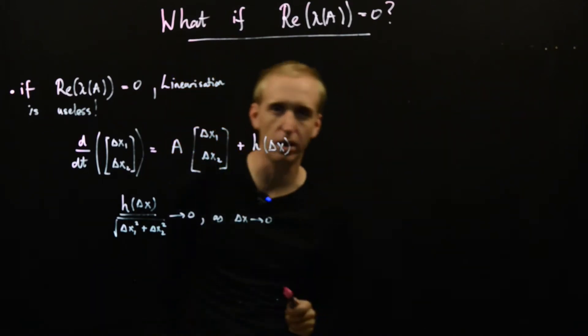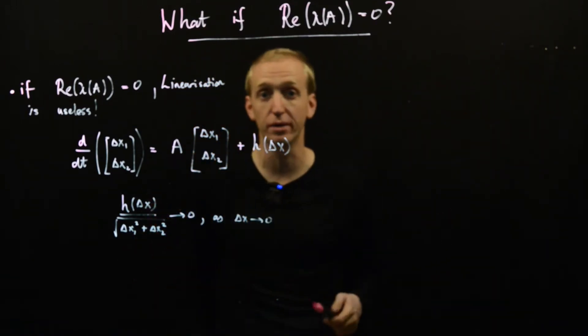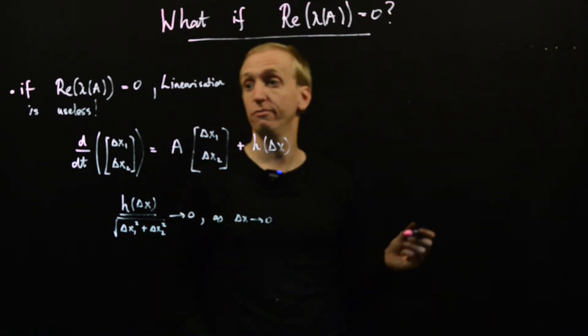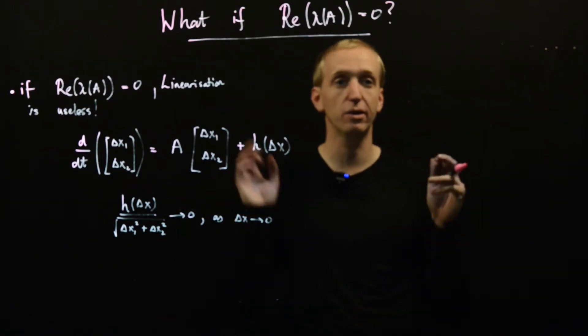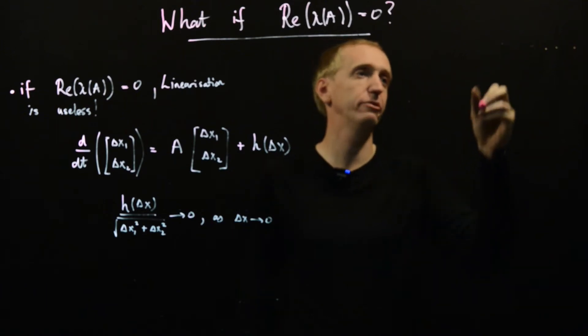This h had the property that it goes to zero as delta x goes to zero. And whenever we had sort of higher order stuff or trig functions or anything, this will always happen. And the intuition for why this would happen with higher order polynomials was, we just compare the lengths of various things.